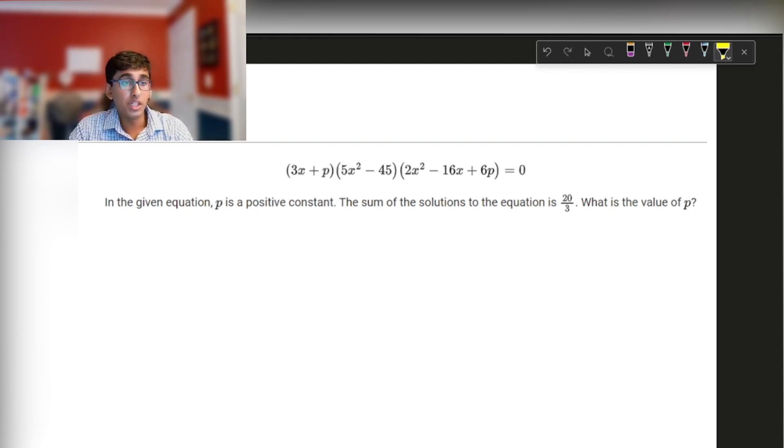In the given equation, p is a positive constant. The sum of the solutions to the equation is 20 over 3. What is the value of p? So I'm going to highlight this final portion here. What is the value of p? We need to be mindful that in the end, we should have a value for p. I know this equation up top can look a little bit intimidating, but we have a shortcut when it comes to sum of solutions. Negative b over a is an equation we can use for quadratics to find the sum of the solutions.